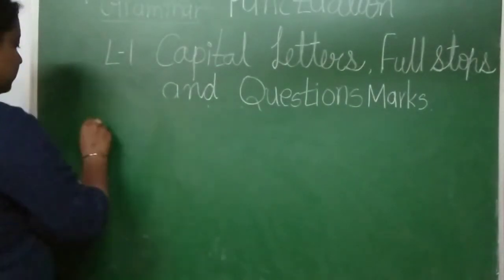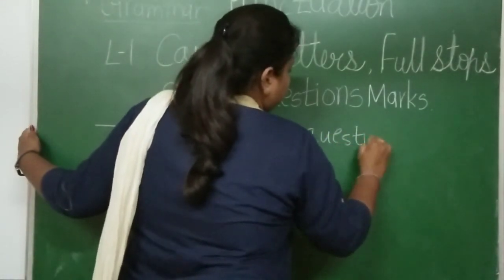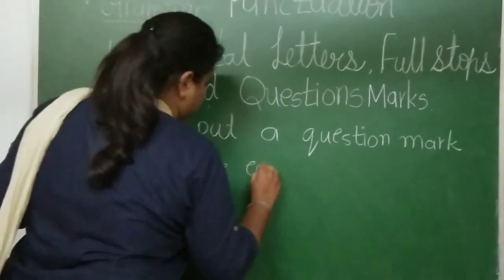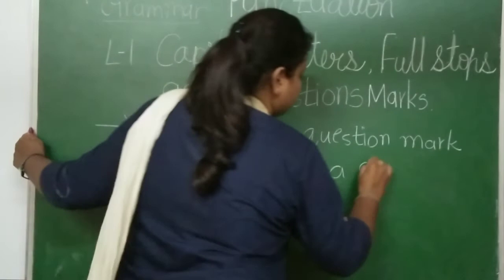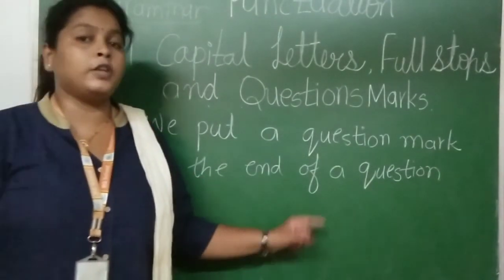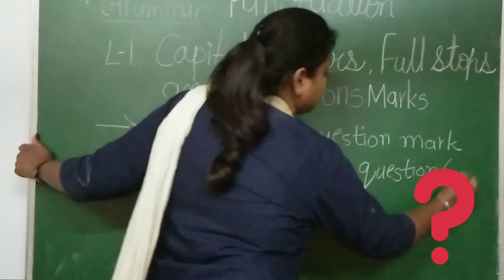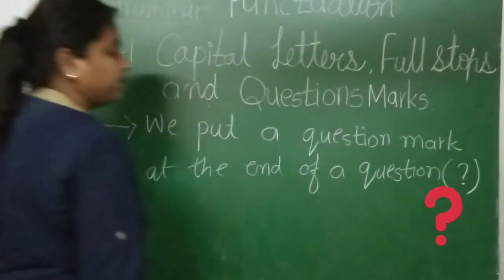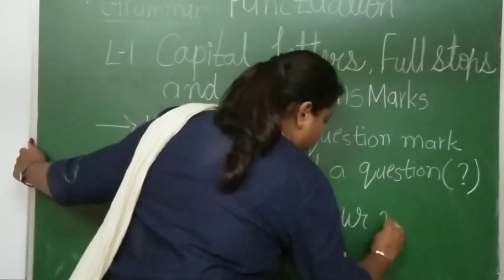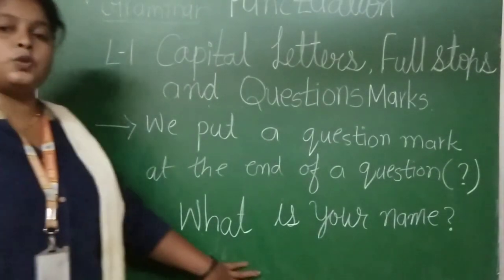After the full stop, a question mark. We put a question mark at the end when we are asking a question. This is the question mark sign. For example: 'What is your name?' — there you need to put a question mark, which shows that you are asking a question.